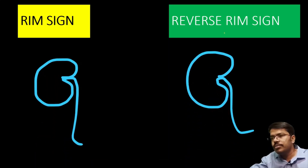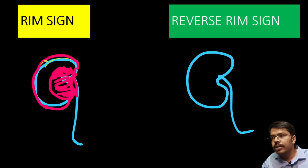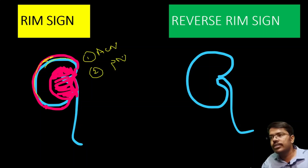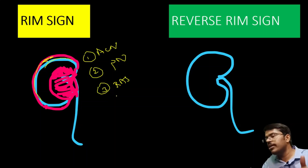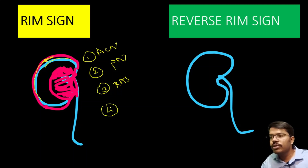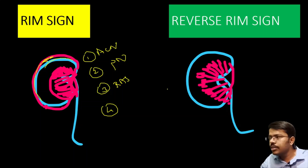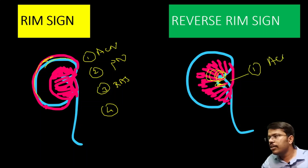In summary: in rim sign, only the outer area of the kidney gets enhanced — mainly the outer border of the cortex — because of the perforating branches. It is seen in acute cortical necrosis, pyelonephritis, renal artery stenosis or infarct whenever there is total cutoff of blood supply, and rarely in severe acute tubular necrosis. Whereas in reverse rim sign, there is no cortical enhancement — only medullary enhancement — and this is typically seen in acute cortical necrosis.